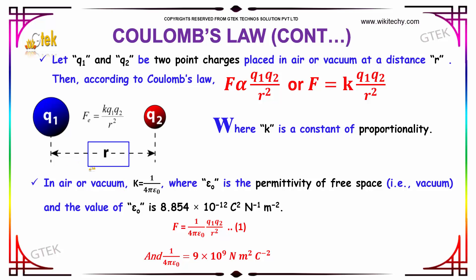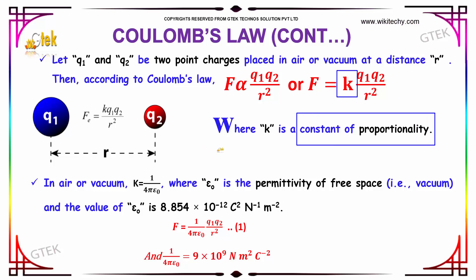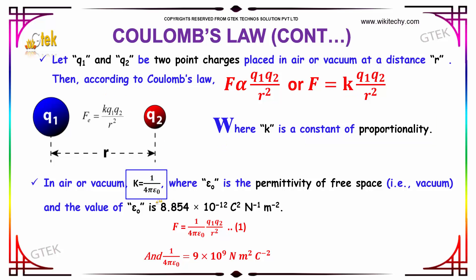Then according to Coulomb's law, we can derive that force is proportional to Q1 into Q2 divided by R square, or F equal to K into Q1 into Q2 divided by R square, where K is the constant of proportionality. In air or vacuum, the value of K will be 1 divided by 4 pi epsilon 0, where epsilon 0 indicates the permittivity of free space or vacuum.